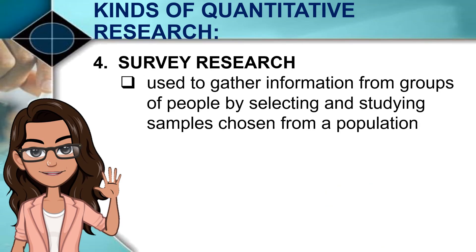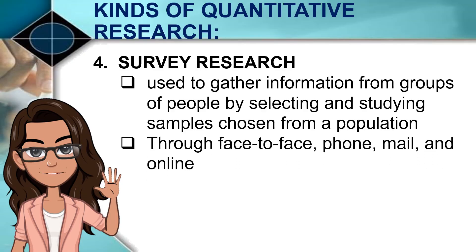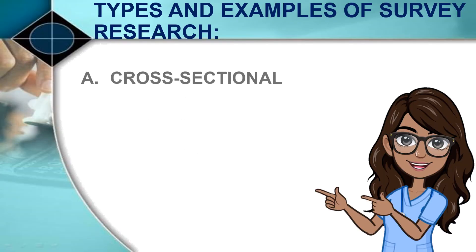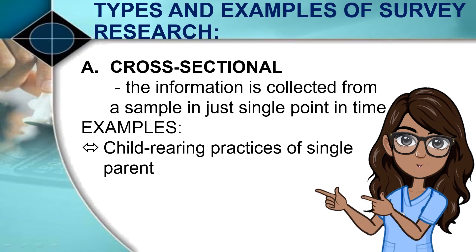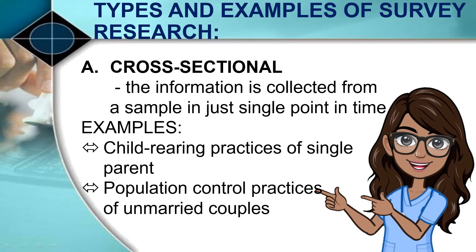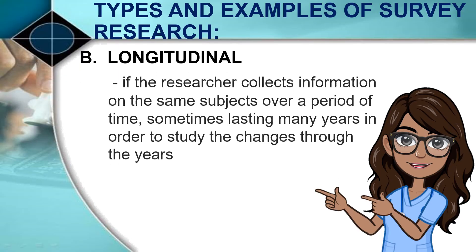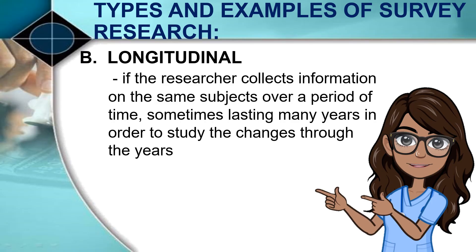The fourth kind of quantitative research is survey research. It is used to gather information from groups of people by selecting and studying samples chosen from a population. It may be done in various ways, like face-to-face, phone, mail, and online. A survey research may be cross-sectional if the information is collected from a sample at a single point in time — examples include child reading practices of single parents and population control practices of unmarried couples. A survey research is considered longitudinal if the researcher collects information on the same subjects over a period of time, sometimes lasting many years, in order to study the changes through the years.